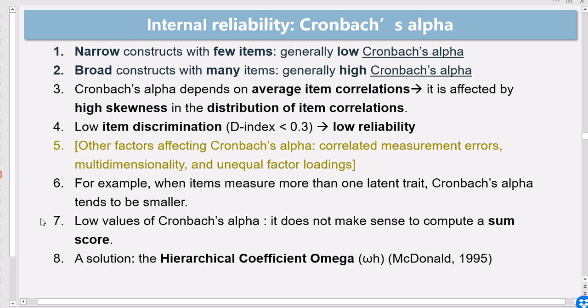One more thing is if your Cronbach's alpha level is small, so what does that imply for your scale? Well, that basically means that it doesn't make sense to compute a sum score. So if your, let's say, reading test has a low score of 0.2 of coefficient alpha, then you cannot add up the scores of your students and give them one reading test score because of the poor internal consistency of your test items.